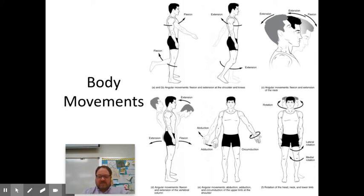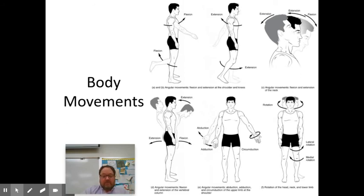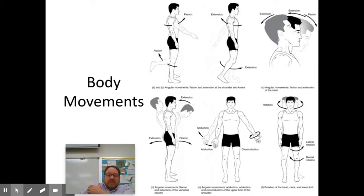The movements of the foot include plantar flexion, where you plant your toes; dorsiflexion, where you pull your toes back; and inversion and eversion. Depending on the shape of the joint and how the muscles attach, it causes different movements. For example, the deltoid muscle sits as a cap on the shoulder and inserts into the deltoid tuberosity in the humerus. Because it's on the lateral aspect, when the deltoid contracts, it abducts the arm.